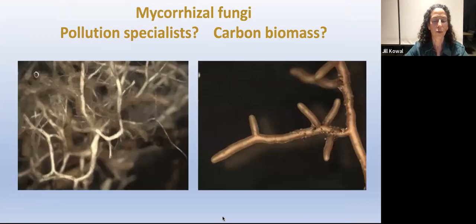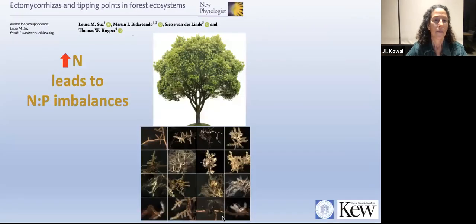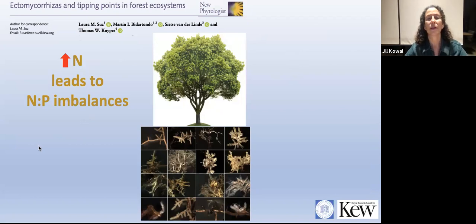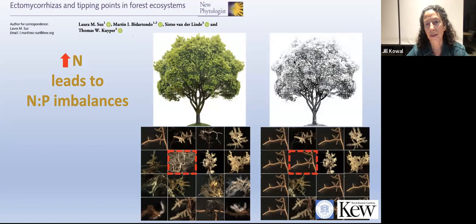Here's a quick quiz: which type of fungi do you think would be better at sponging up carbon? It's obviously the rhizomorphic type, not the simpler one. This takes us to a recent paper from the Kew lab by Laura Suz and Martin at Imperial. They talk about tipping points occurring in forests, because the increase in nitrogen is leading to nitrogen-phosphorus imbalances. As a result, we're seeing more and more of the simpler mycorrhizal fungi and losing the more complex rhizomorphic mycorrhizal fungi.